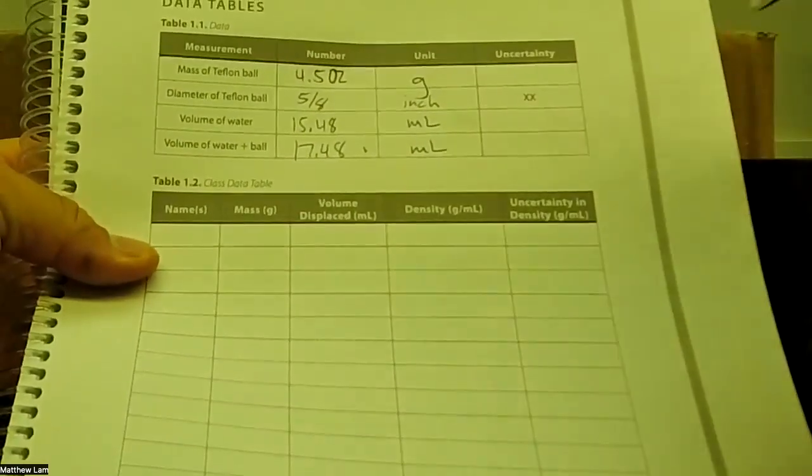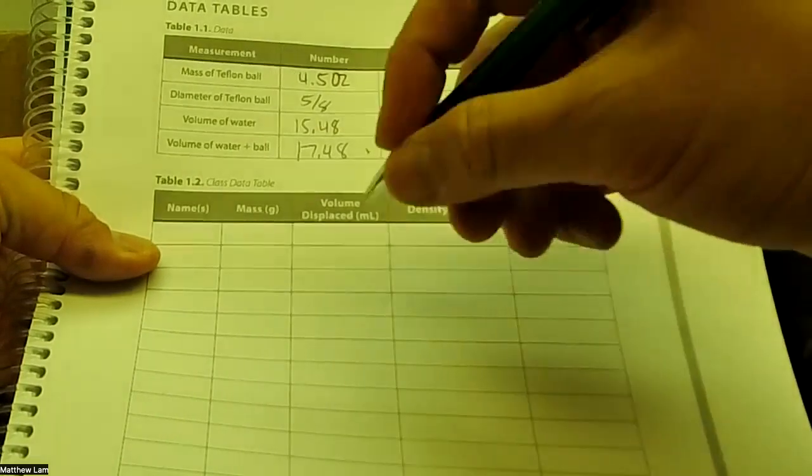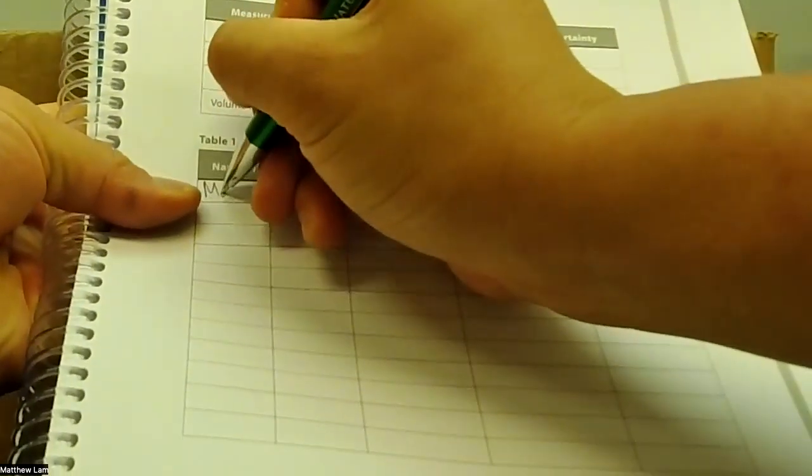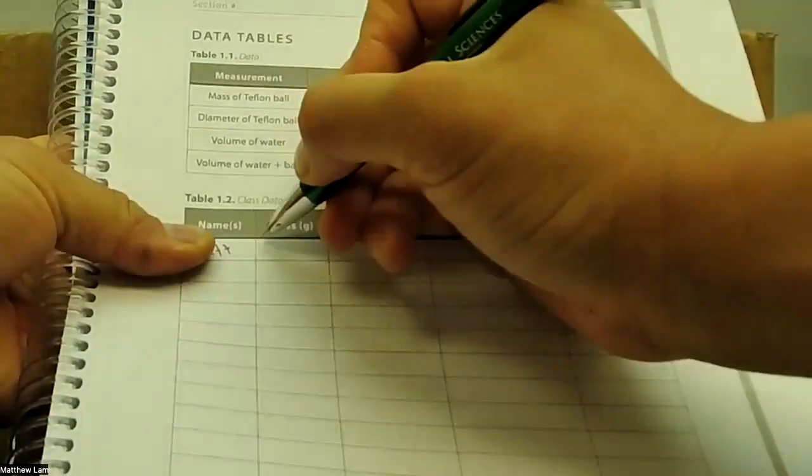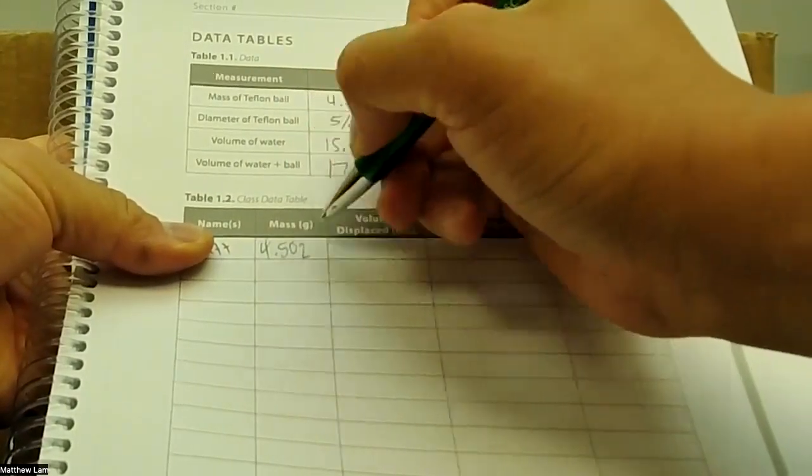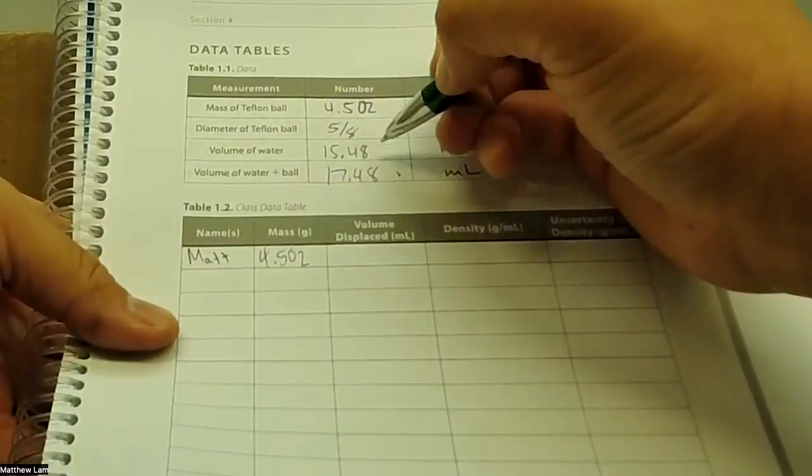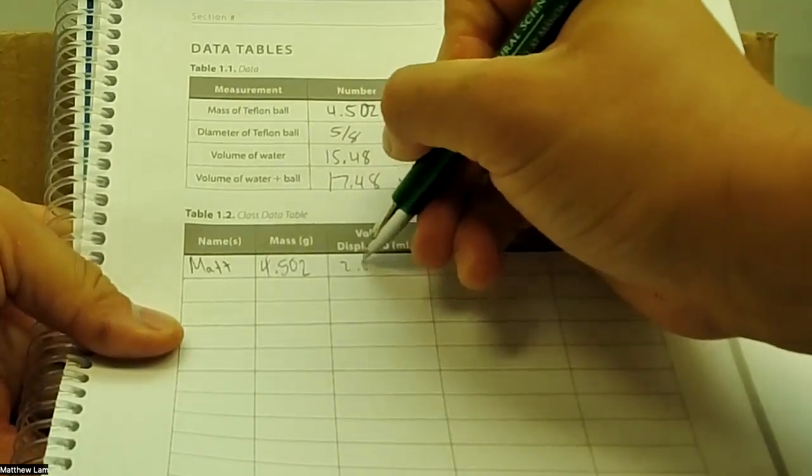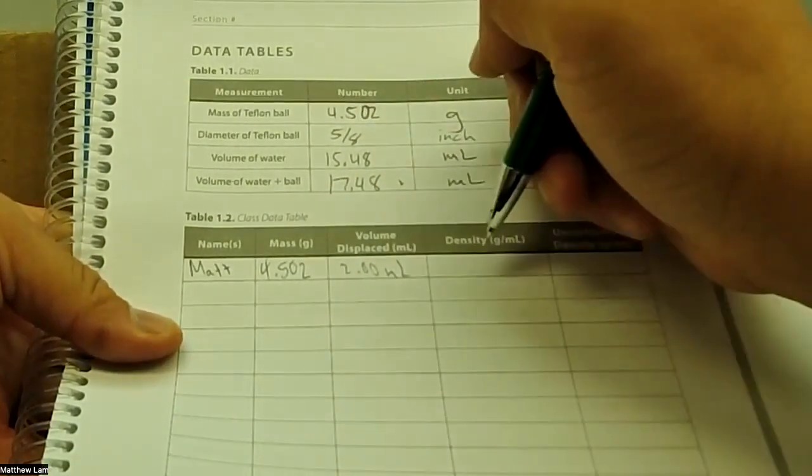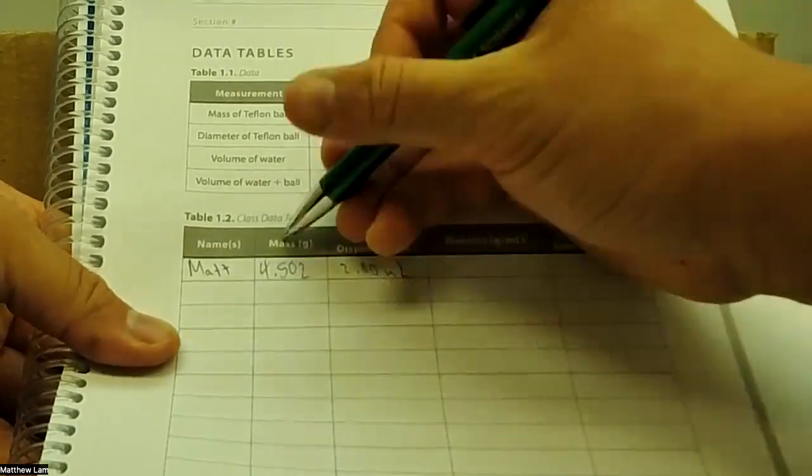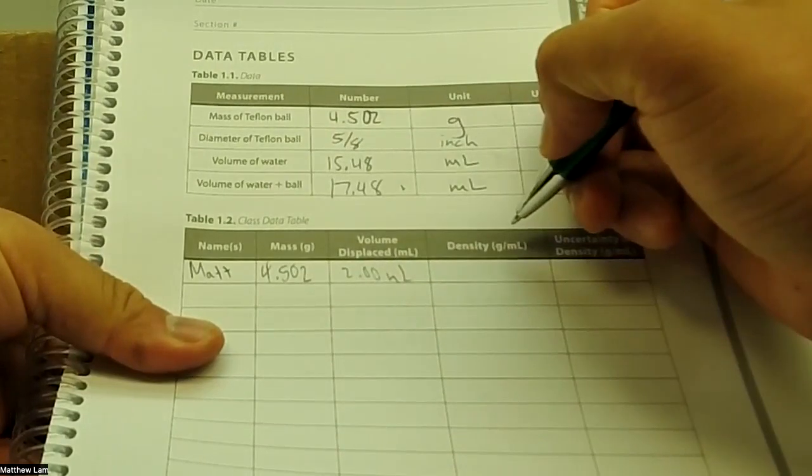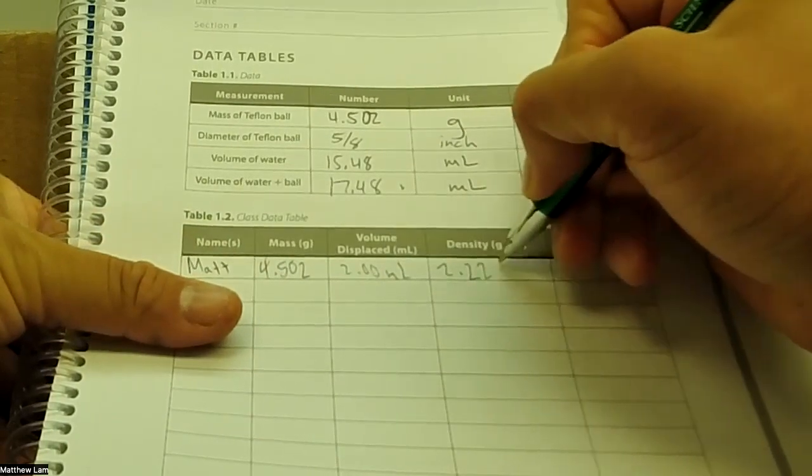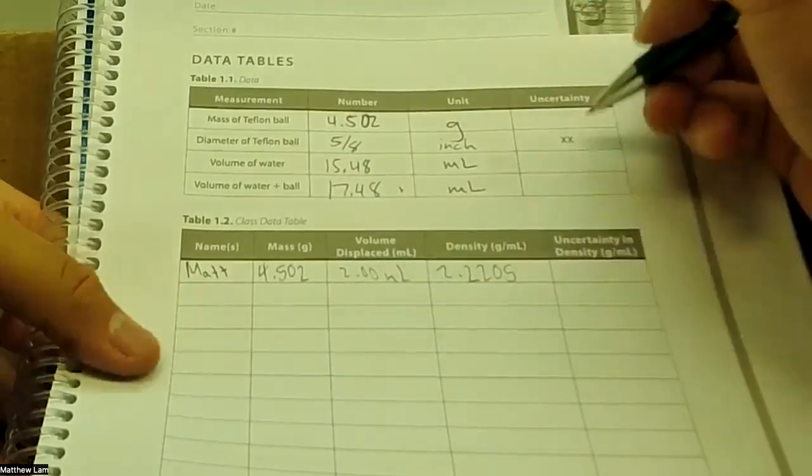And then what you want to do next is determine these values here. So the mass of your Teflon ball is 4.502 grams, as up there already. The volume displaced would be 17.48 minus 15.48, so that would be 2.00 mils. So our density would be mass divided by volume, which would be 2.205 grams per mil. So that is our density there.